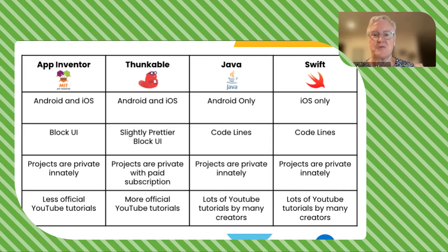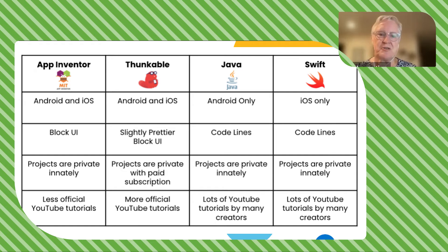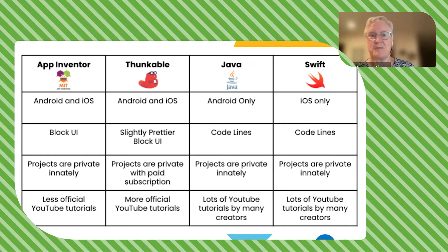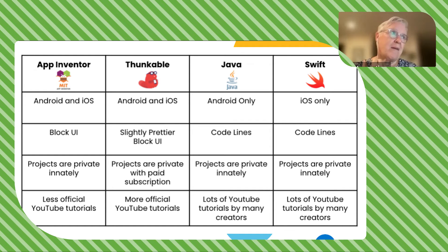The biggest difference is that App Inventor and Funkable are blocks-based coding platforms, so it's not text-based — you'll be dragging around blocks. Java and Swift are text-based languages where you actually type code, and generally they're thought of as more advanced languages.